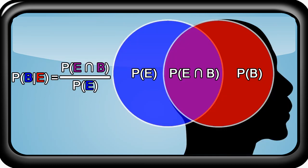Bayes' Theorem can also be depicted using a Venn diagram, and the equation can be rewritten as the purple section — the intersection of the red and blue circles — that is, the intersection of your beliefs with the evidence, divided by the blue circle, the probability of the evidence.